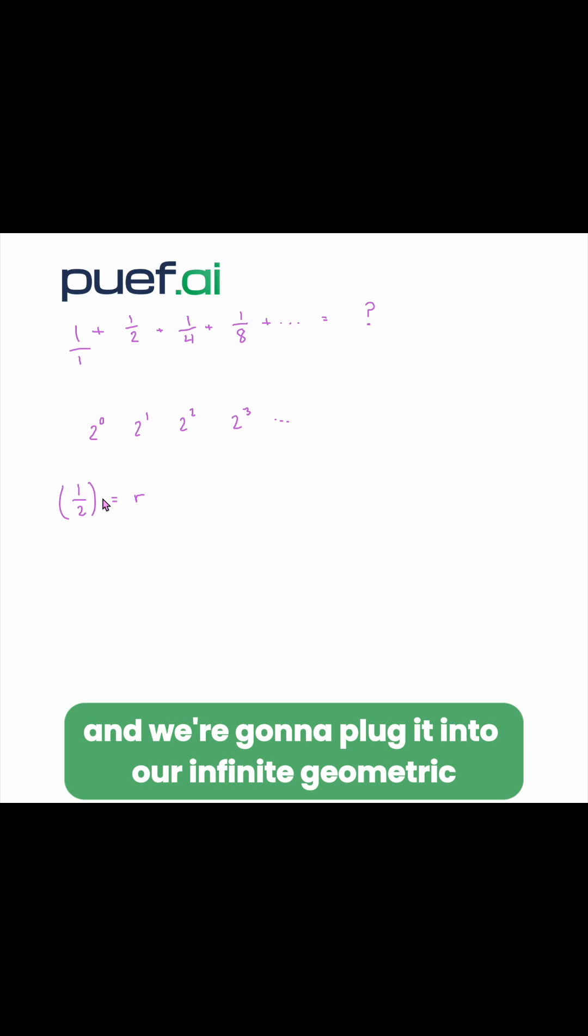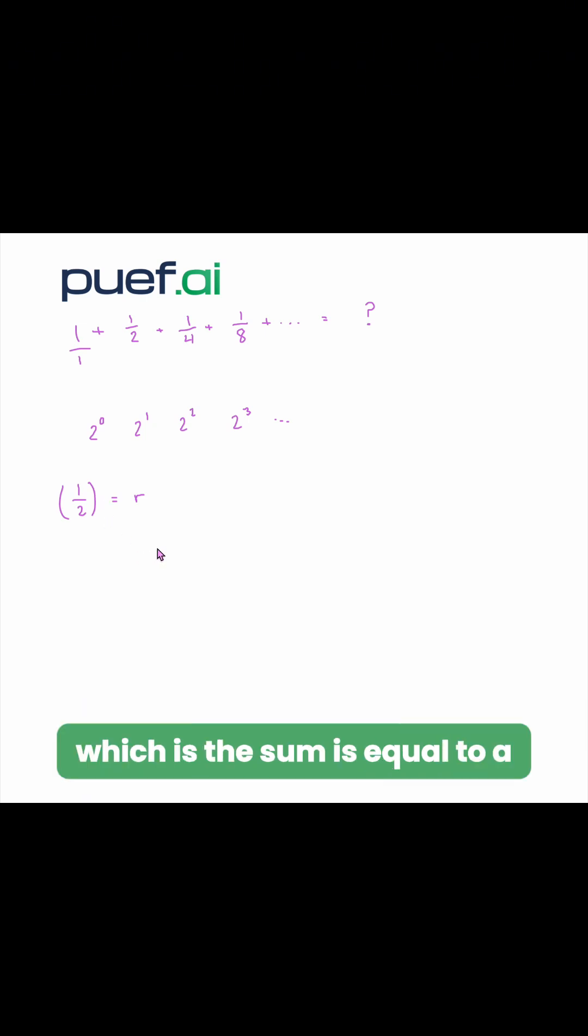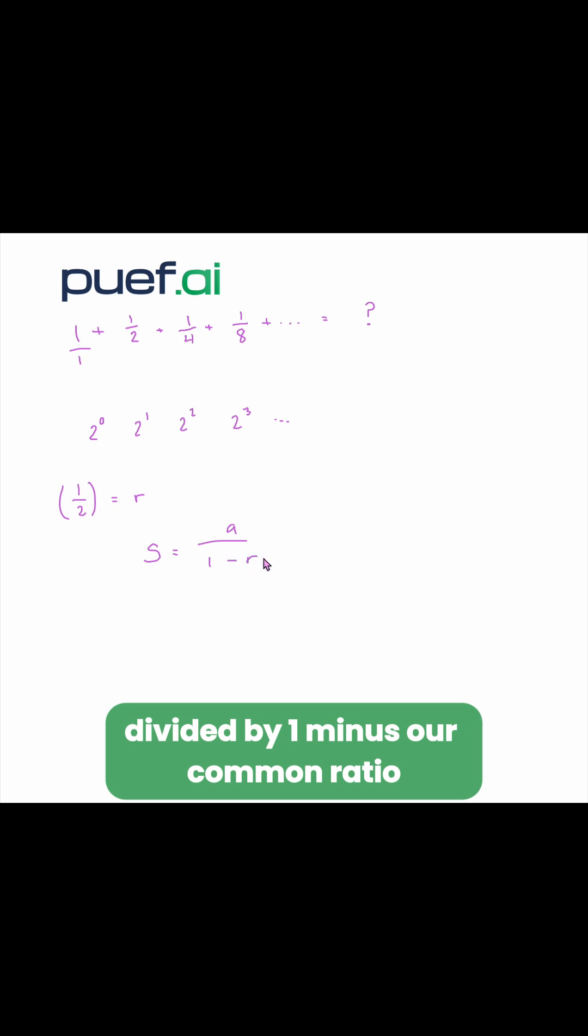Okay, so now we just want to take this and we're going to plug it into our infinite geometric sum formula, which is the sum is equal to A, which is our first term, divided by 1 minus our common ratio.